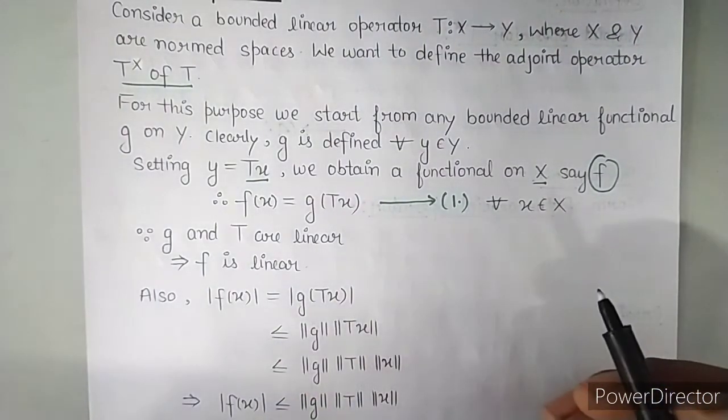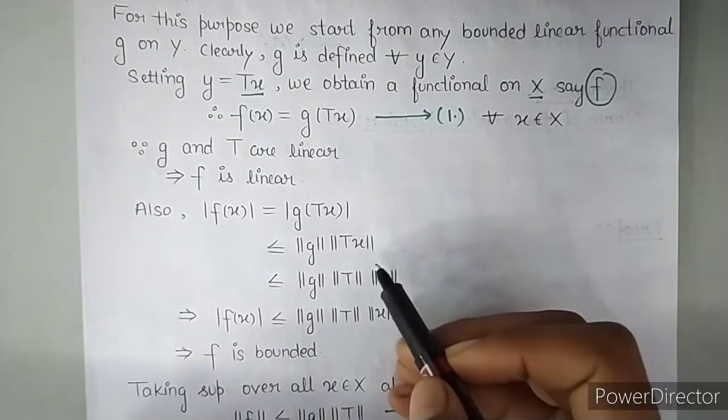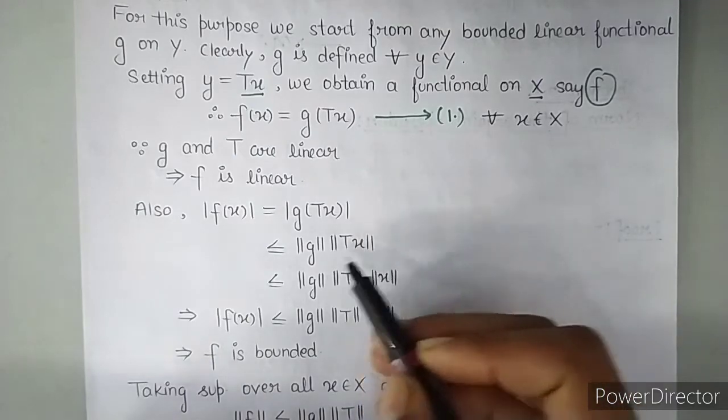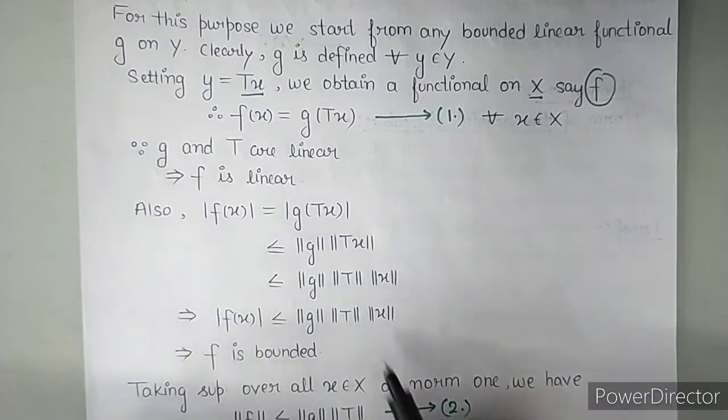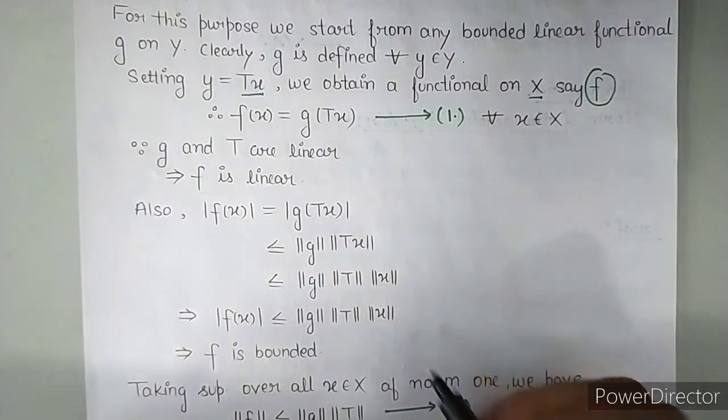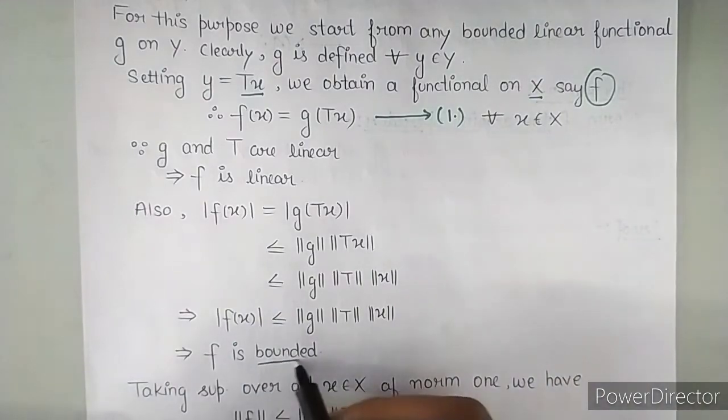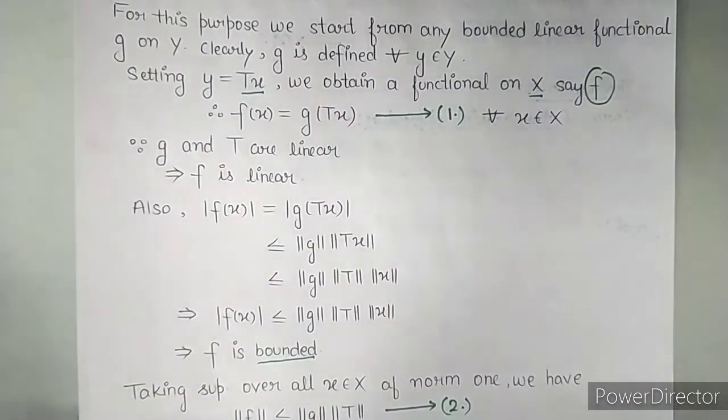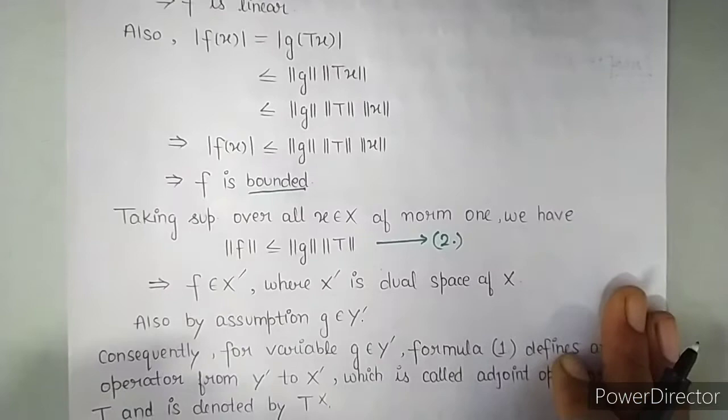And this mod is less than norm of G times norm of TX. And then we opened norm of TX again. So this is less than or equal to norm of G times norm of T times norm of X. So what type of expression is this? From this expression what did we find out? That this F is bounded. So F is both linear and bounded.